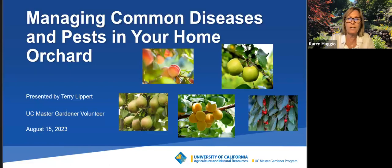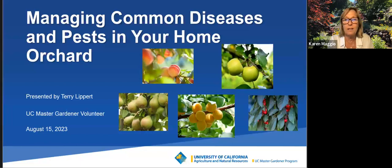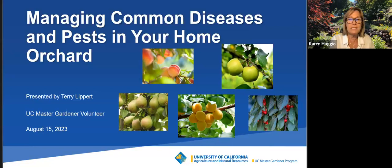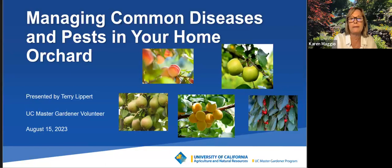Tonight you will learn how to diagnose and manage common diseases and pests that can spoil the fruit in your home orchard. Our speaker will discuss common fruit tree problems, including peach leaf curl, fire blight on pears and apples, codling moth that leads to wormy apples and pears, shot hole disease that shows up as holes in your leaves and blemishes on your fruit, and eutypa disease that could kill your apricot and cherry tree if left untreated. Also, scale, aphids, and mite infestations that can overwinter in fruit trees. You'll learn to identify these problems, hear recommendations for when and how to treat them, and learn techniques for preventing problems from reoccurring.